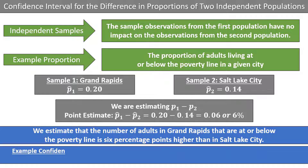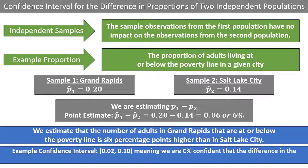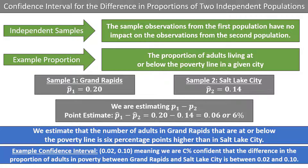An example confidence interval might be 0.02 to 0.1, meaning that we are c% confident that the difference in the proportion of adults in poverty between Grand Rapids and Salt Lake City is between 0.02 and 0.1. Notice that we can refer to proportions as either percentages or decimals — both ways are acceptable.